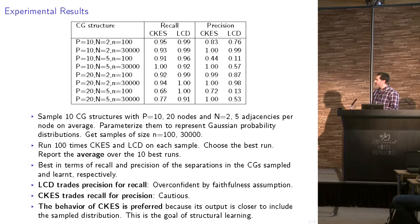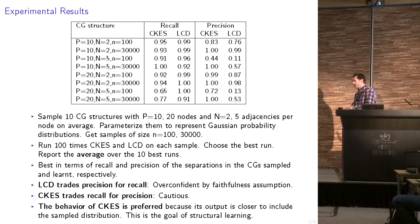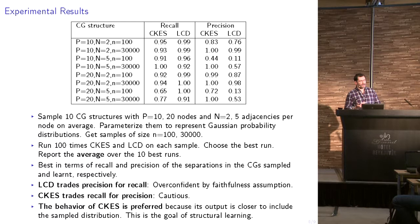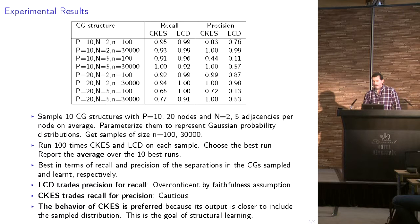Our explanation for why LCD goes for recall and CCAS for precision is as follows. All data comes from a faithful distribution, but a finite sample does not guarantee that the empirical distribution is faithful to any chain graph. LCD still insists on the faithfulness assumption and therefore behaves more aggressively, while CCAS is more cautious because it makes no faithfulness assumption.